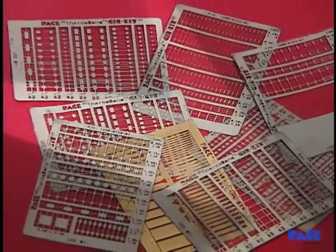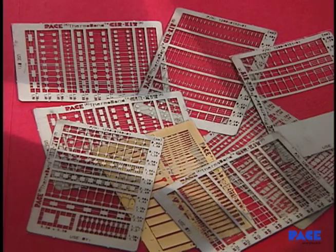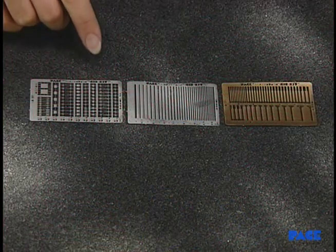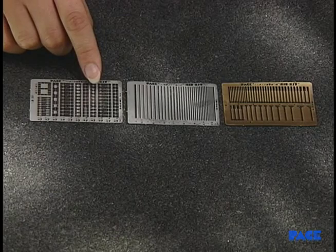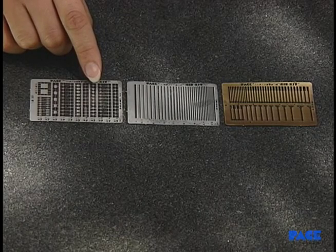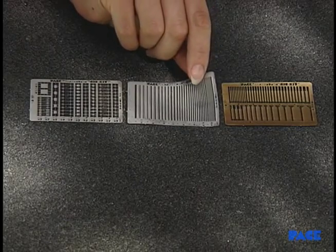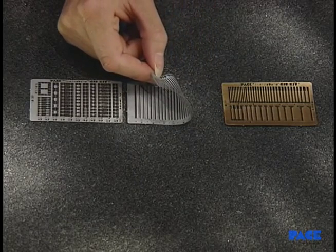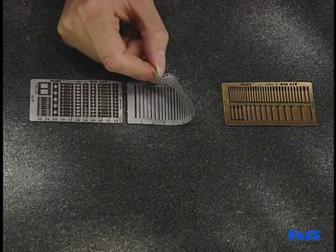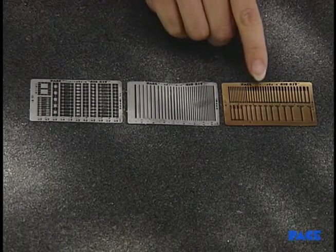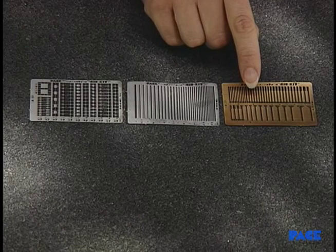Customer-specified frames are also available. All surface mount and through-hole frames come standard with tin-lead plating on the top side. The special lap trace frames are tin-lead plated on both sides without the Thermobon adhesive. The edge connector frame comes standard with gold plating on the top side.